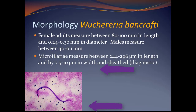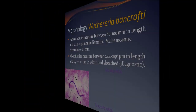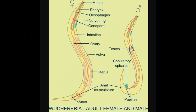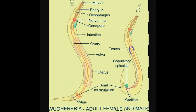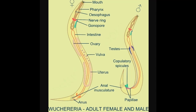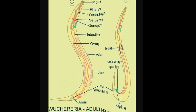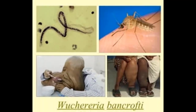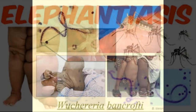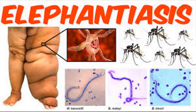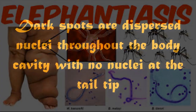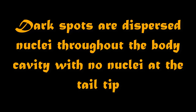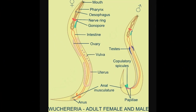Morphology. As a dioecious worm, W. bancrofti exhibits sexual dimorphism. The adult worm is long, cylindrical, slender, and smooth with rounded ends. It is white in color and almost transparent. The body is quite delicate, making removing it from tissues difficult. It has a short cephalic (head) region connected to the main body by a short neck, which appears as a constriction. Dark spots are dispersed nuclei throughout the body cavity, with no nuclei at the tail tip. Males and females can be differentiated by size and structure of their tail tips.